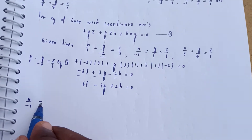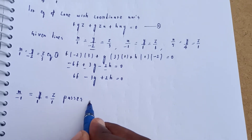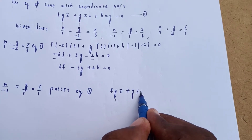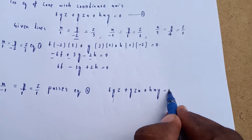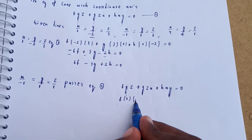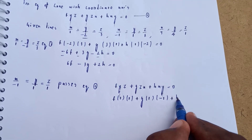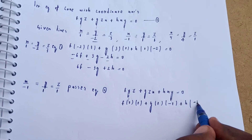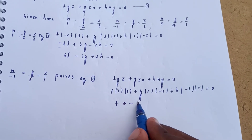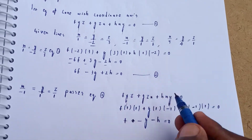The second line x/(-1) = y/1 = z/1 passes through equation number 1: f·yz + g·zx + h·xy = 0. Substituting direction ratios (−1, 1, 1): f·(1)(1) + g·(1)(−1) + h·(−1)(1) = 0, giving f − g − h = 0. This is equation number 3.